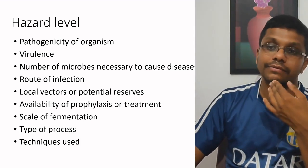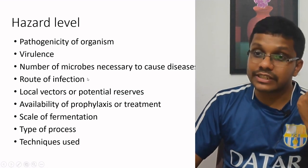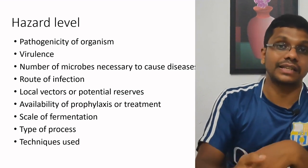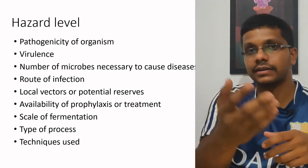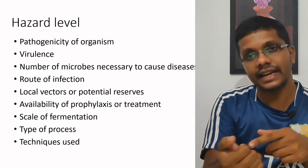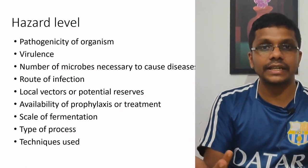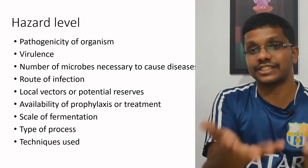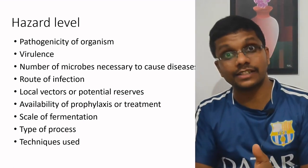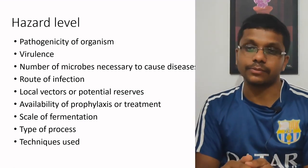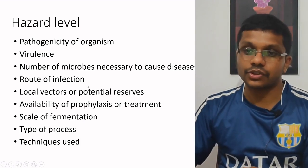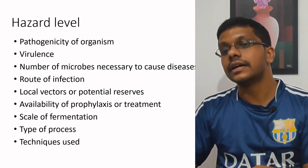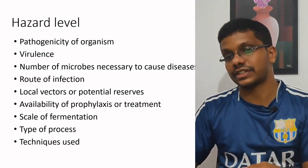Based on the number of microorganisms, we can do the hazard level analysis. Fourth, the route of infection — infection by direct blood contact is necessary for some diseases like hepatitis B, but other organisms like COVID-19 spread through the air and are therefore more infectious. Fifth, the presence of local vectors or potential reservoirs — if local vectors are present, the chance of spreading the disease is high; if potential reservoirs are present, the chance of infection is high.